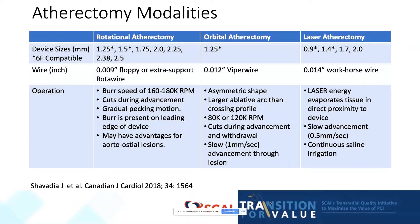Orbital atherectomy is accomplished by gentle flow advancement through the lesion at approximately one millimeter per second. Finally, laser atherectomy, which can be used with a standard workhorse wire, uses laser energy to evaporate tissue in direct proximity to the device. Similar to orbital atherectomy, slow advancement is critical, while maintaining continuous saline irrigation.